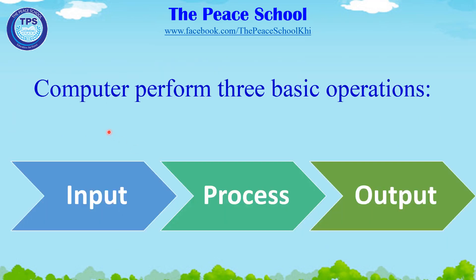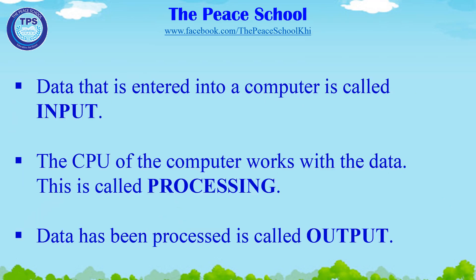Now we will see how a computer works. Computers perform three basic operations: input, process, and output. Data that is entered into a computer is called input. The CPU of the computer works with the data — this is called processing. Data that has been processed is called output.